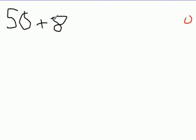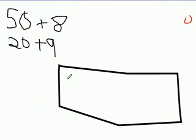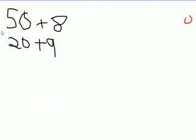Say your problem is 58 times 29. You will do 50 plus 8 and 20 plus 9. Then you will want 50 times 20, so you will put that there. 50 times 20 equals 1,000.